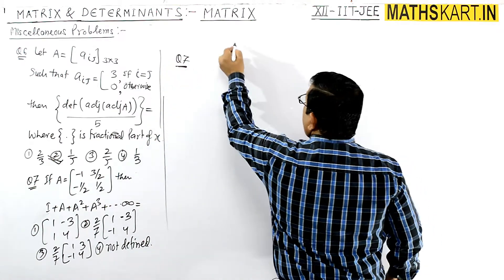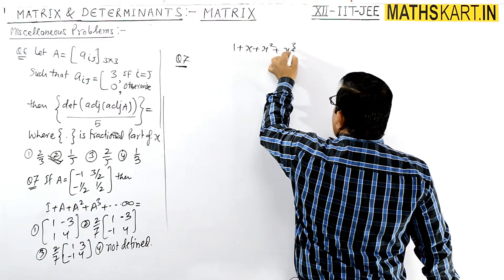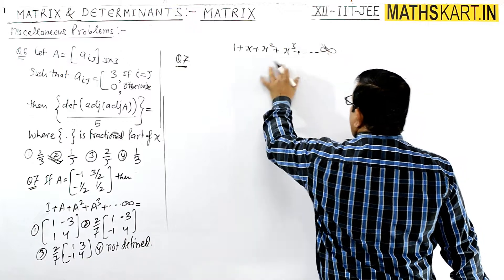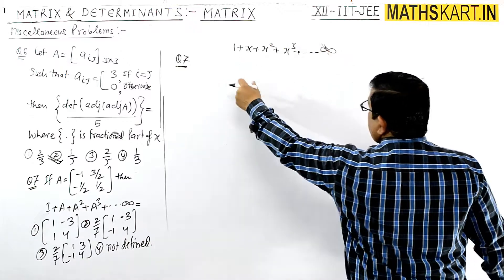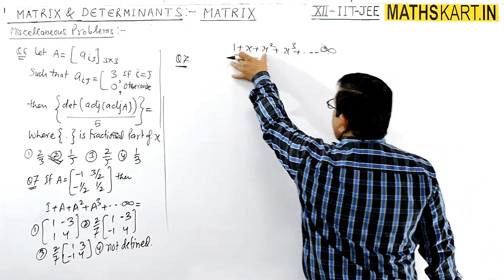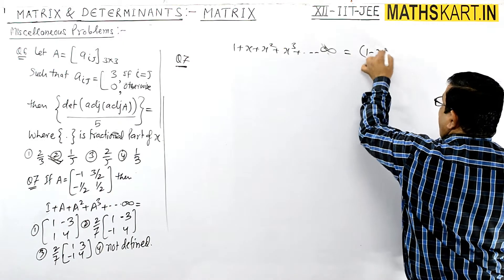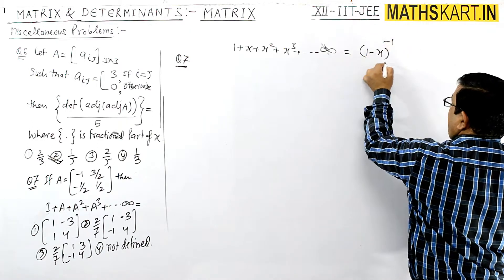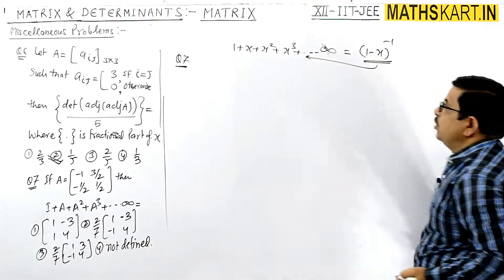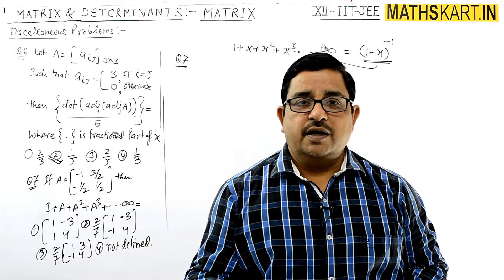Let's look at the result. The series 1 + x + x² + x³ up to infinite can be written as (1 − x)^(−1). This is basically the expansion of (1 − x)^(−1) in binomial theorem.